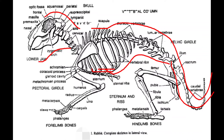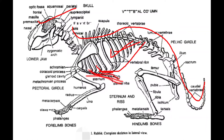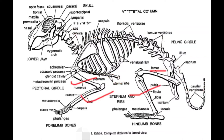Appendicular skeleton is associated with appendages, i.e. limbs. Axial skeleton includes skull, vertebral column, ribs attached with vertebral column, and sternum. Whereas appendicular skeleton consists of the limb bones attached with the girdles, i.e. pelvic girdle and pectoral girdle. Appendicular skeleton is made up of appendages and the girdles to which the appendages are attached.